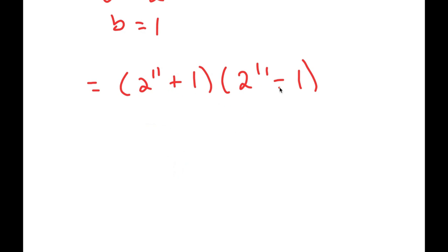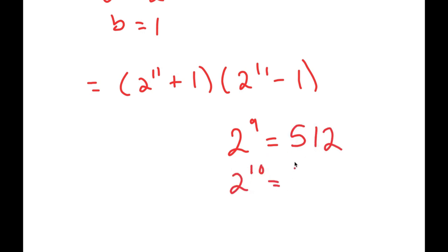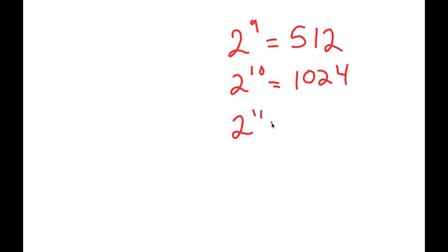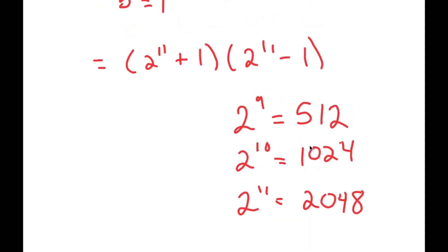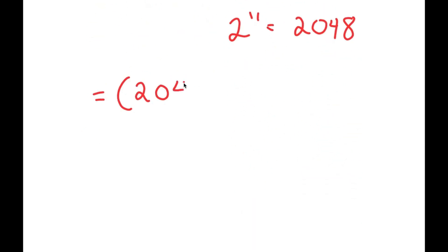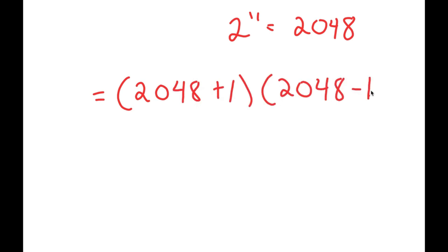What is 2 to the power of 11? Well, 2 to the power of 9 is 512. 2 to the power of 10 is double of 512, which is 1024. So 2 to the power of 11 is double of 1024, which is 2048. So now I get 2048 plus 1, times 2048 minus 1.